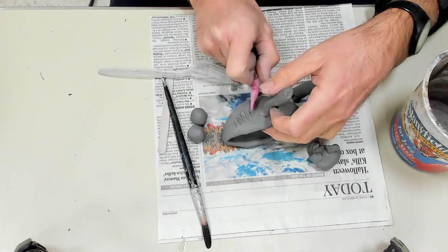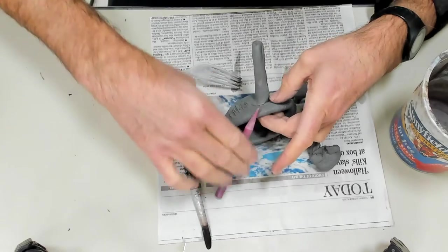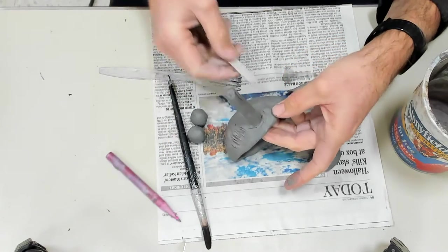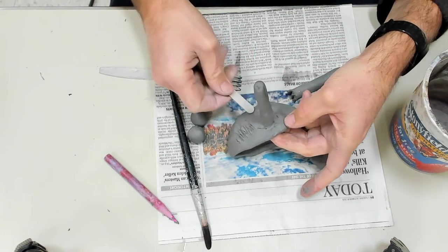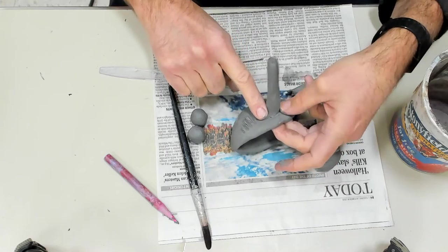Then clean it up. I'll smooth it down. I can use my popsicle stick to kind of smooth that out and I'll take my finger to finish it off.